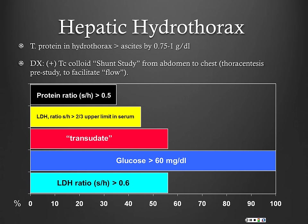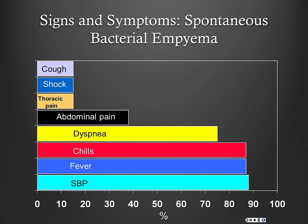On thoracentesis, the protein ratio is usually greater than 0.5, LDH is greater than two-thirds the upper limit, and the fluid is usually transudative — just like their ascites. Glucose is always greater than 60 mg/dL in patients with hepatic hydrothorax, and the LDH ratio is usually greater than 0.6. So basically everything is transudative with a high glucose.